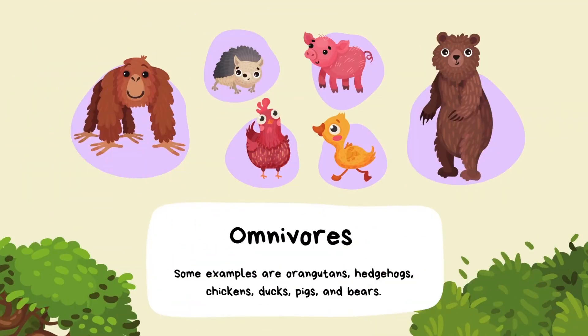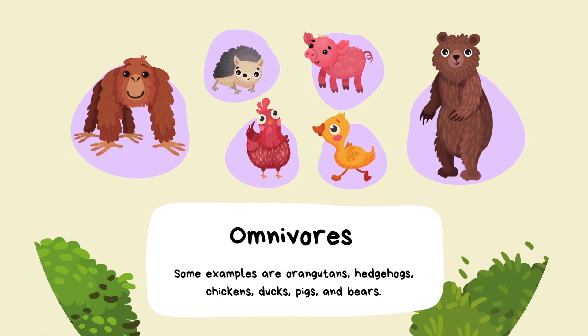Omnivores eat both plants and meat. Some examples of omnivores are orangutans, hedgehogs, chickens, ducks, pigs, and bears.